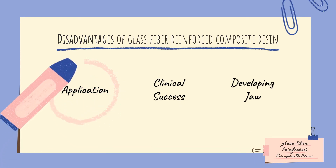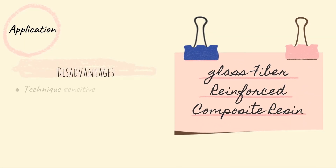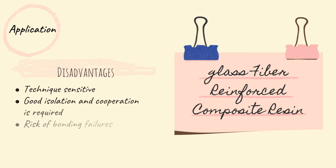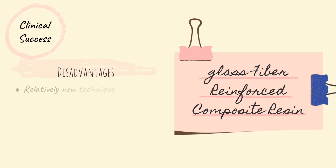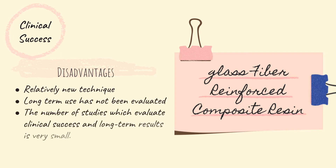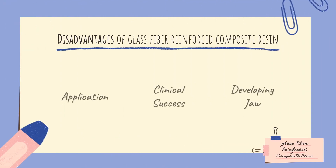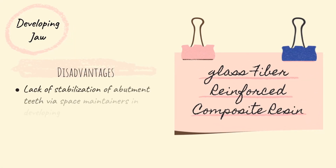Now the disadvantages of glass fiber reinforced composite resin. Regarding application, it is technique sensitive, requiring good isolation and patient cooperation, and carries a risk of bonding failures. In terms of clinical success, it is a relatively new technique and its long-term use has not been fully evaluated, as the number of studies assessing clinical success and long-term results is very limited. Lastly, regarding the developing jaw, there is a lack of stabilization of abutment teeth via space maintainers in developing jaw patients.